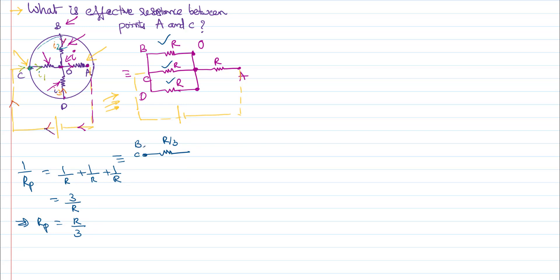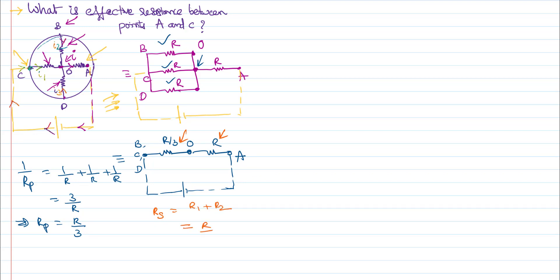The single equivalent resistance from point B, C, or D to point O is R by 3. From O onwards there is another R leading to point A. You can draw the battery for understanding. Now you can see R by 3 and R are in series. R_series equals R1 plus R2, where R1 is R by 3 and R2 is R, giving 4R by 3. So the effective resistance between points A and C is 4R by 3.